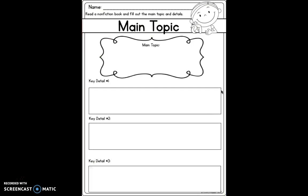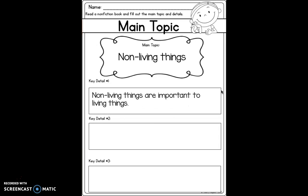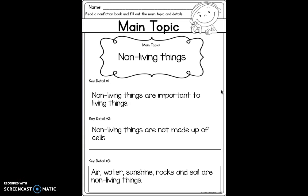Let's fill in our organizer. My main topic: non-living things. What did I learn? Non-living things are important to living things. Non-living things are not made up of cells. And examples: air, water, sunshine, rocks, and soil are non-living things. I hope you learned a lot about how you can find the main topic and key details of a text.